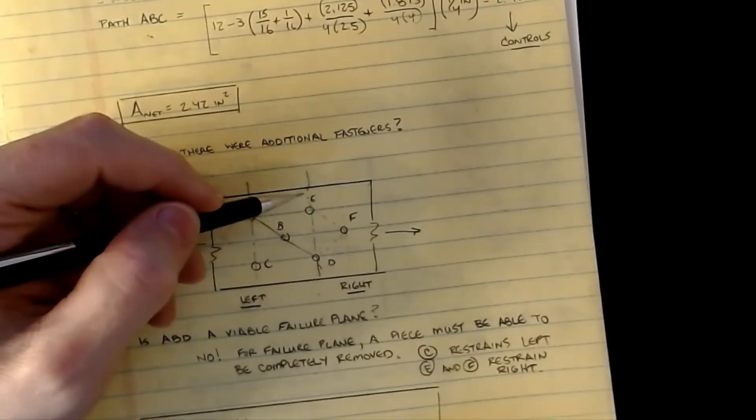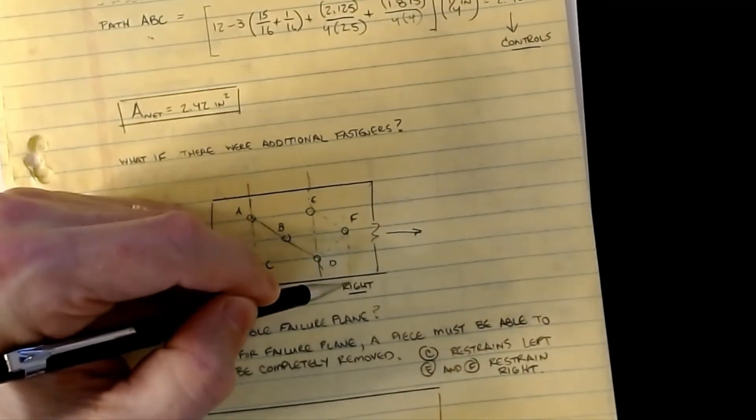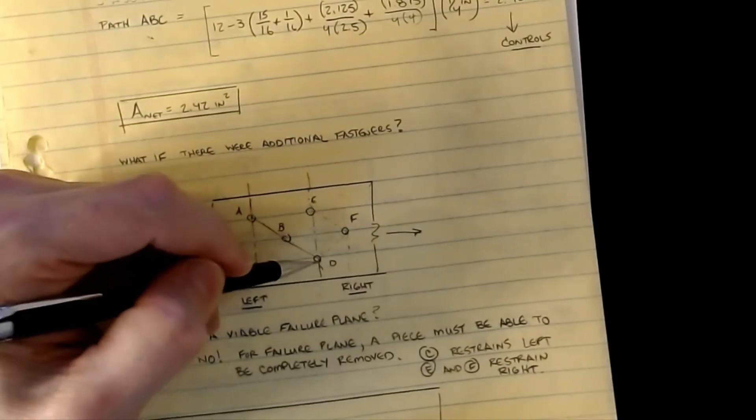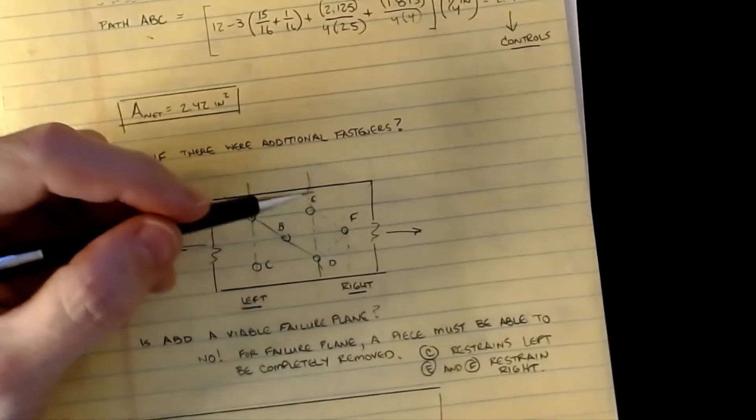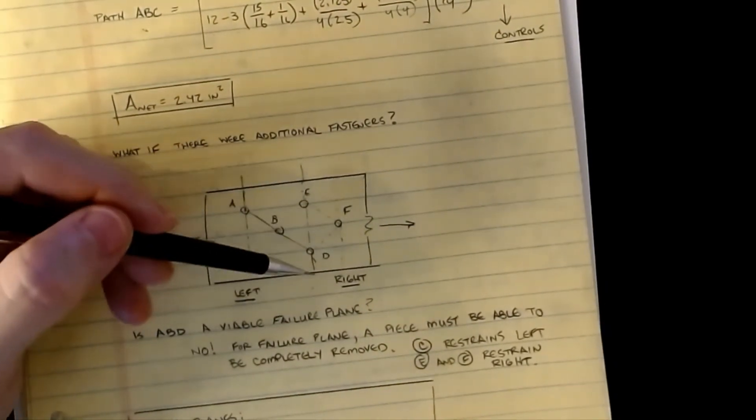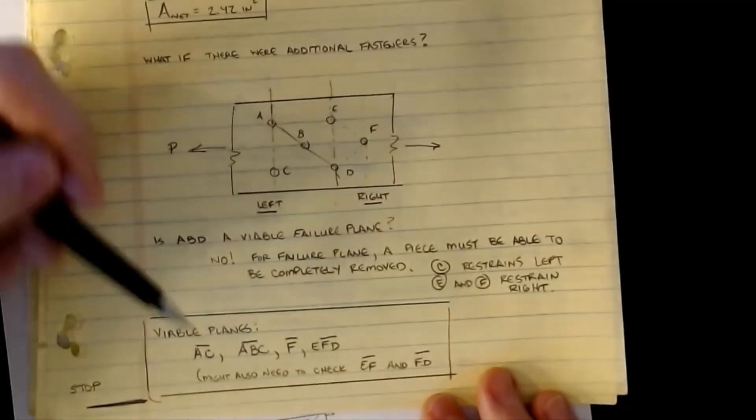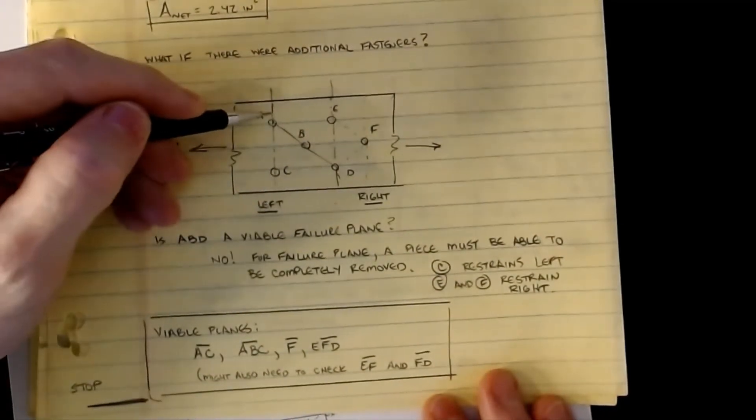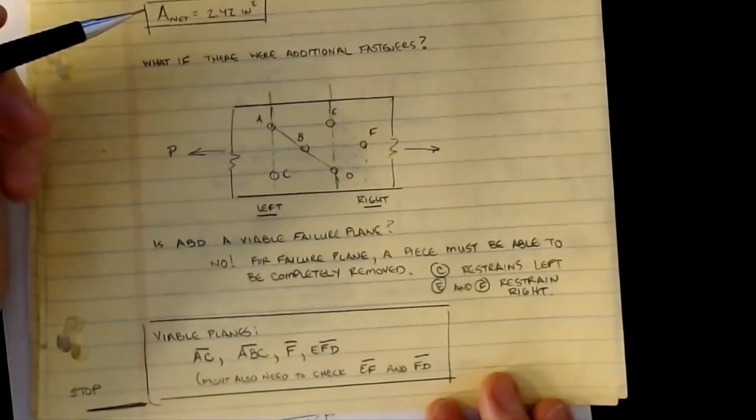You could also argue maybe I could do a shortcut to E over to F, and then this guy comes straight down. That would probably be one worth checking as well. Likewise, I could go from D to F and shortcut across here and not come back. All those could potentially be our potential planes we're looking at. To check this for both directions, these are the planes I would check: AC, ABC, F, EFD, EF, and FD. Notice all of them involve a perpendicular jump out to the edge.